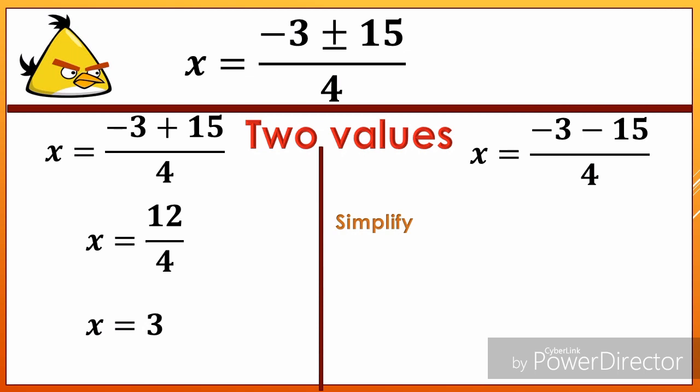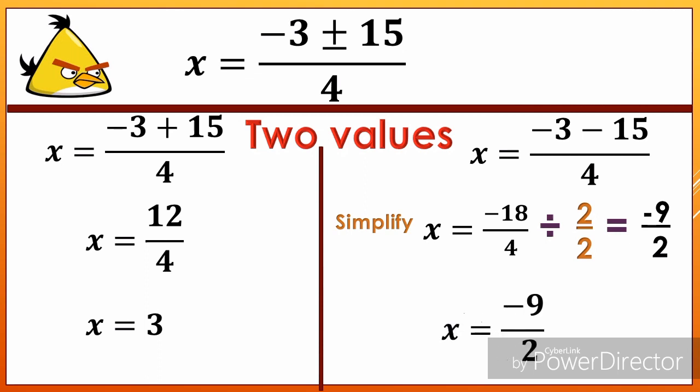The second solution: x equals negative 3 minus 15, which equals negative 18, all over 4. Simplifying by dividing both numerator and denominator by 2: negative 18 divided by 2 is negative 9, and 4 divided by 2 is 2. Therefore, x equals negative 9 over 2.